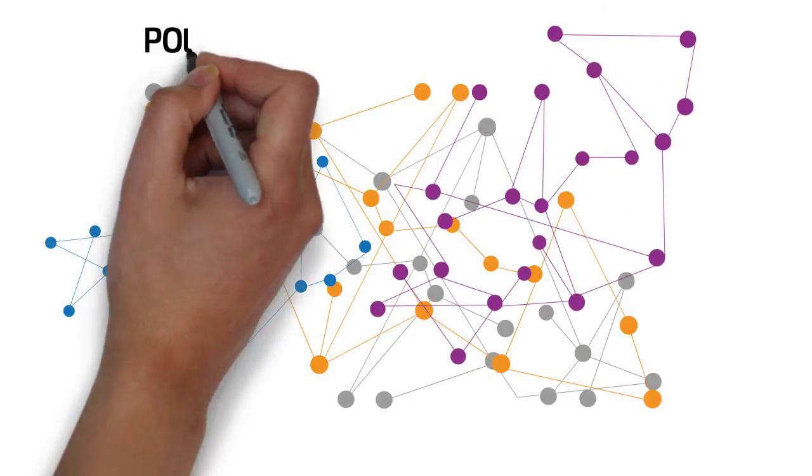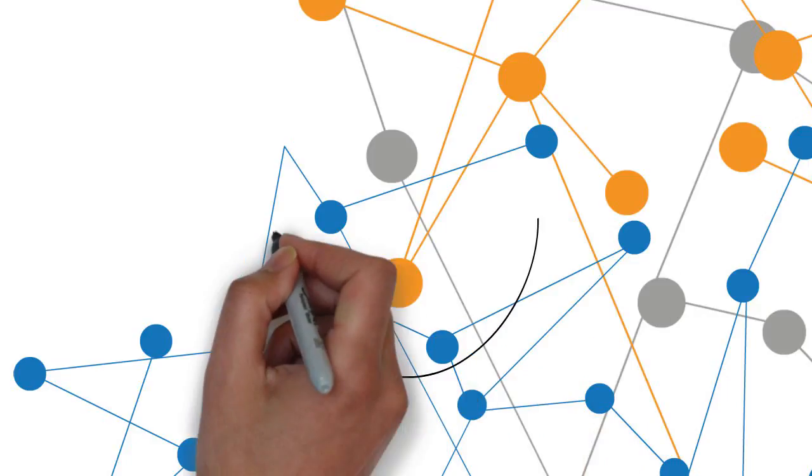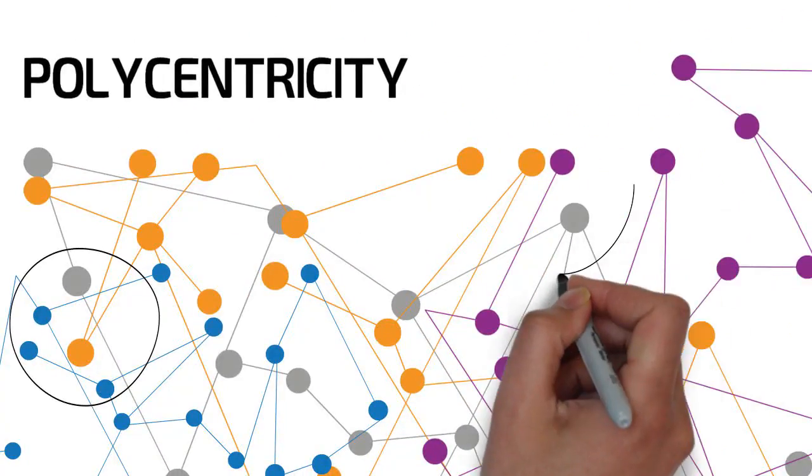The lens of polycentricity provides a novel way of looking at this governance landscape, where there are multiple independent, but interconnected, centres of decision making.